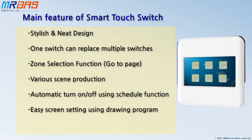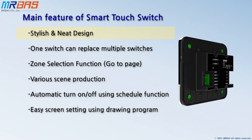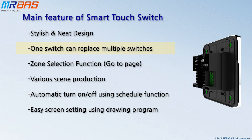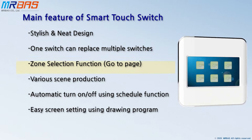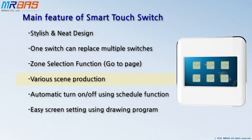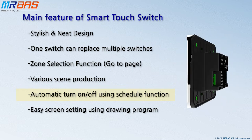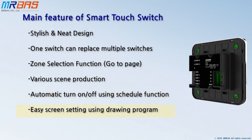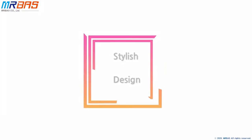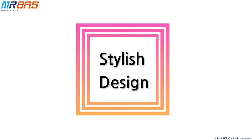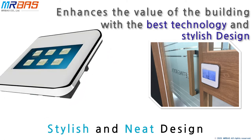The Smart Touch Switch is a multifunctional switch that has six main features. First, STS has a stylish and neat design. This switch can replace a large number of old switches. A function to select the zone for lighting control by using the GoToPage function, able to create different scenes with a single touch. Also, by setting a schedule through the switch, it is possible to automatically turn on and off the lighting. Using the drawing program, you can easily set the background screen and the icon name of the button suitable for the user. With the best technology and stylish design, this switch can upgrade the value of your building.